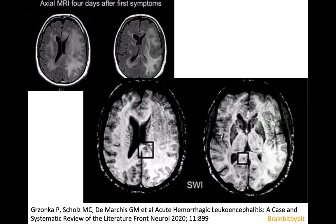The hemorrhages in this hemorrhagic variant are best detected on gradient and susceptibility weighted images, as you can see in the corpus callosum, and there are also hemorrhages in the leptomeninges in this patient. The cortex is usually relatively spared.